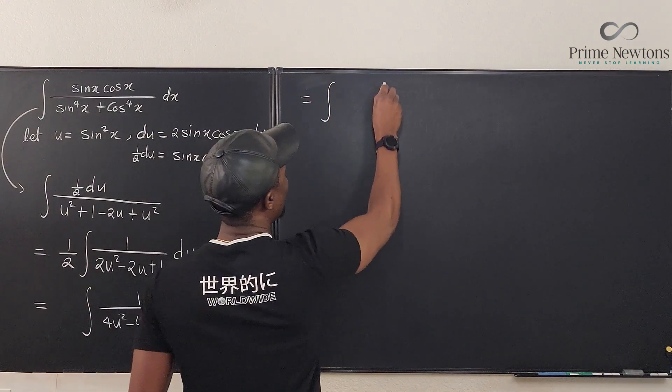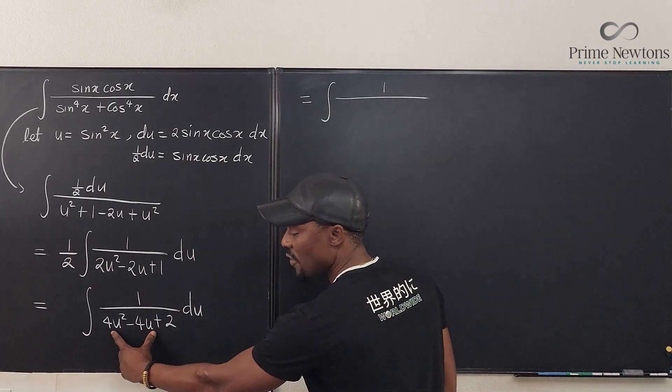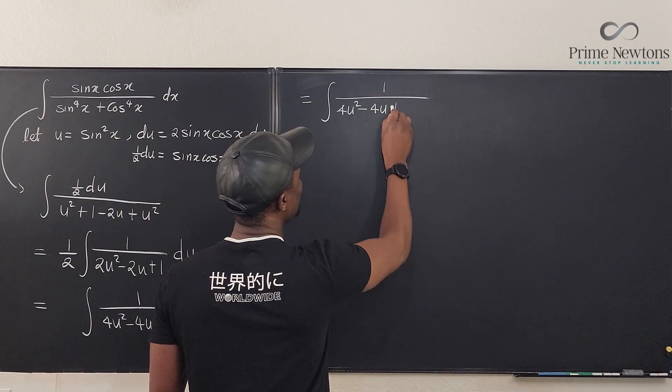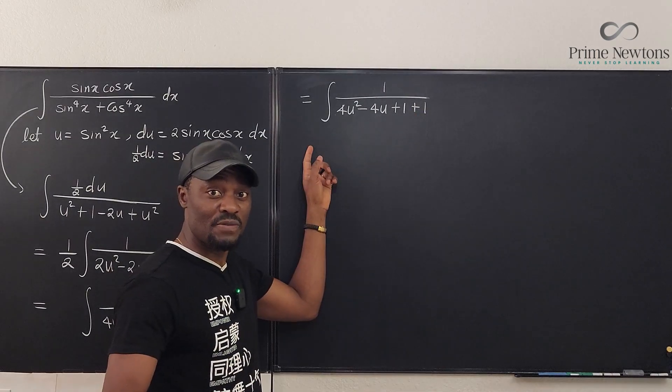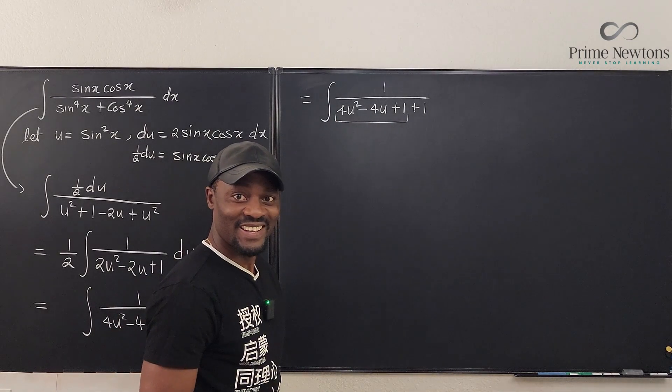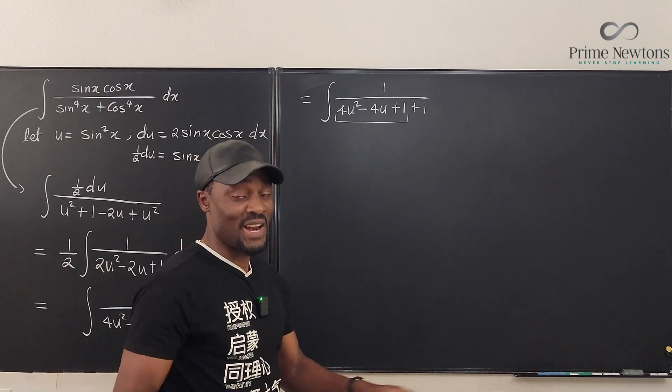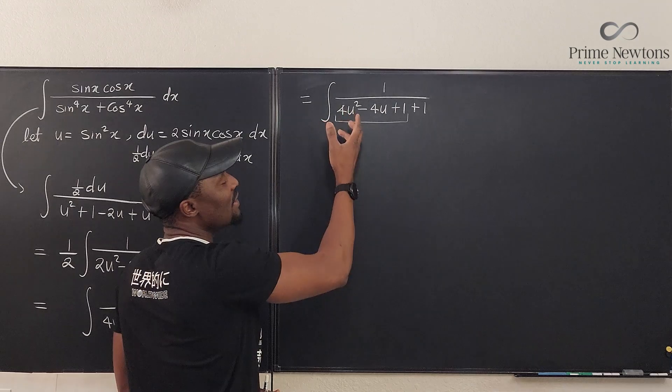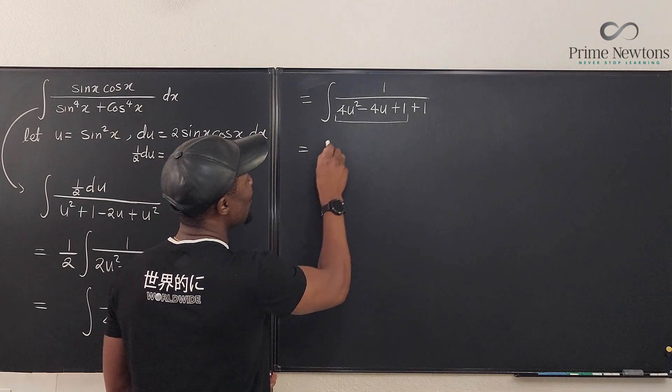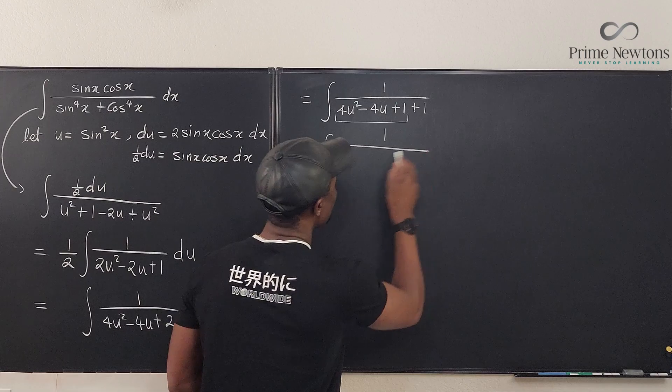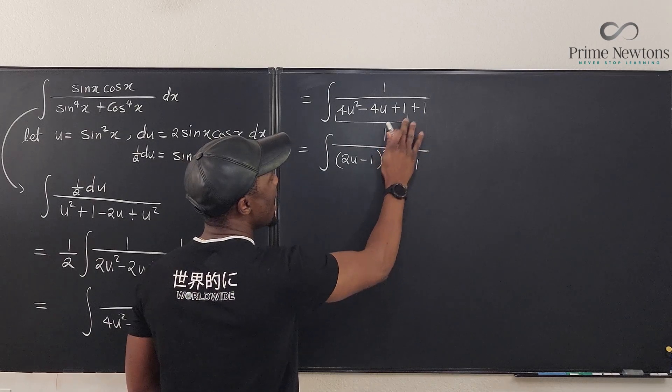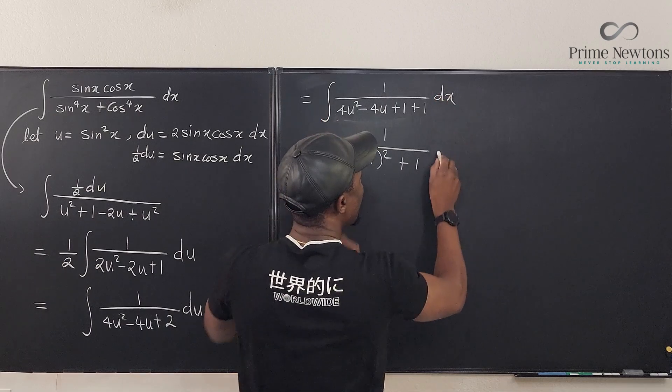Now the stage is set because I have a multiple of 4 here, I have a multiple of 4 here. It's always easy to complete the squares. So this is going to be equal to the integral of 1 over, do you know how you're going to write this? Write it this way: 4u² - 4u + 1 + 1. What we've got, all you have to do is know that this is a perfect square. The square root of this is 2u, so this is going to be equal to the integral of 1 over (2u - 1)² and you put this +1 here. Everything else is waiting for you to just take care of it.